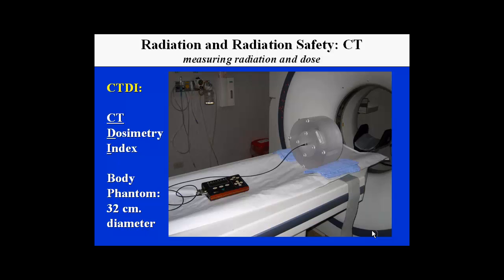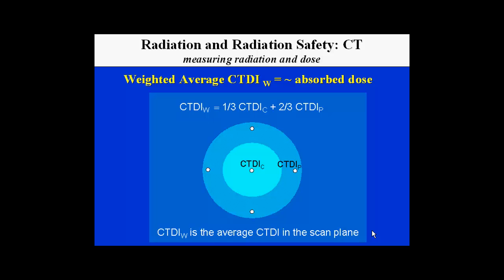We evaluate radiation on any scanner using a common phantom called the CTDI, or CT Dosimetry Index. The scanner parameters are set up to simulate imaging of a patient. We then record the radiation incident within each individual probe area and compute a weighted average dependent upon the mA of each area, which allows us to estimate the absorbed dose.